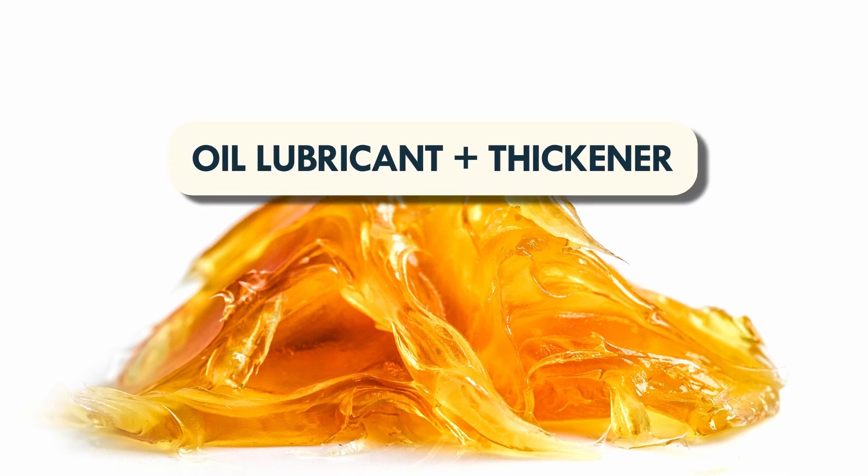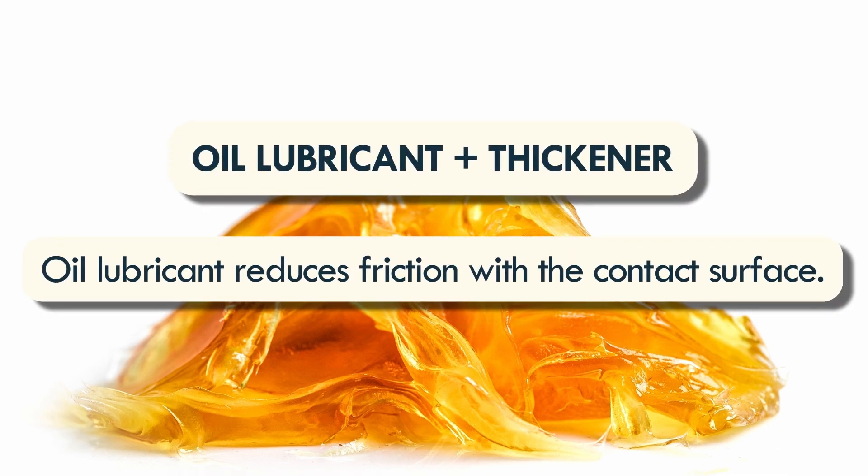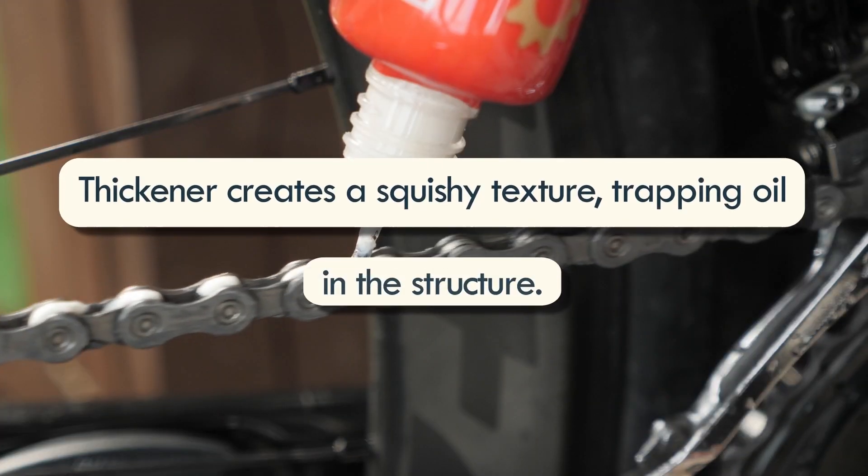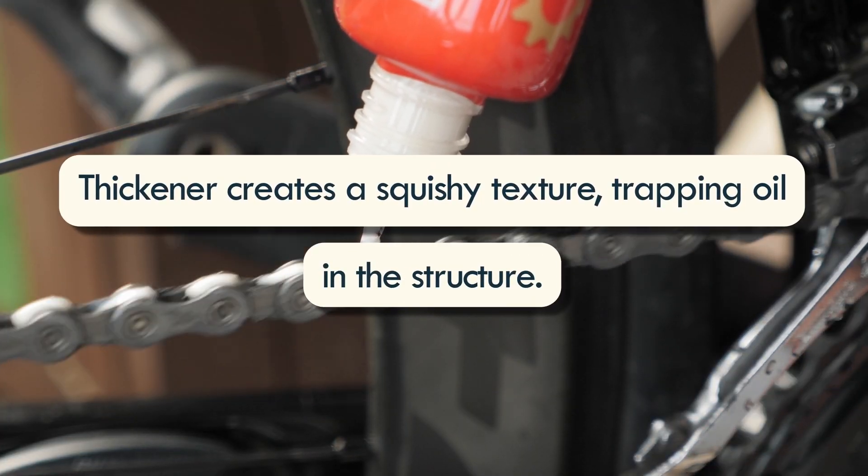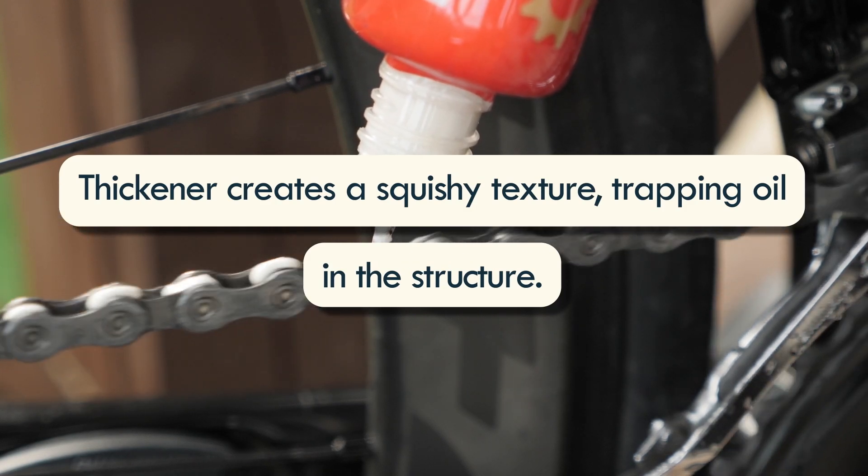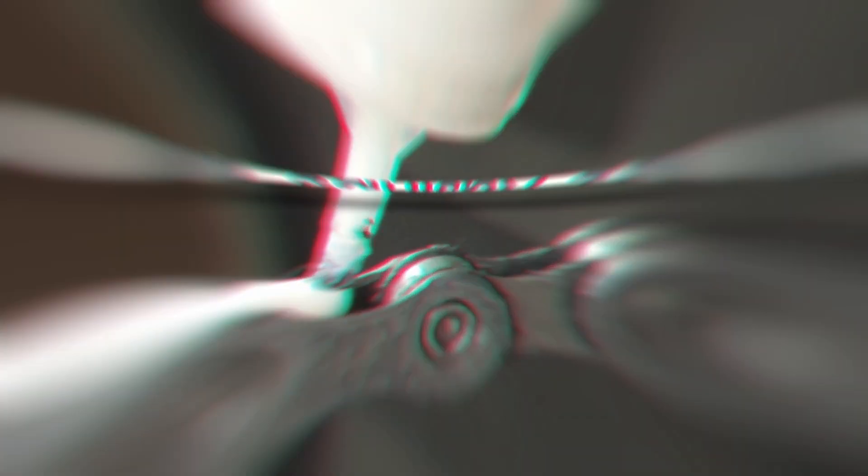To begin with, grease is a semi-solid mixture of an oil lubricant and a thickener. The oil lubricant is a liquid that reduces friction with the contact surface. The thickener gives a semi-solid, squishy consistency, though the oil is retained in a structure and does not spread out.